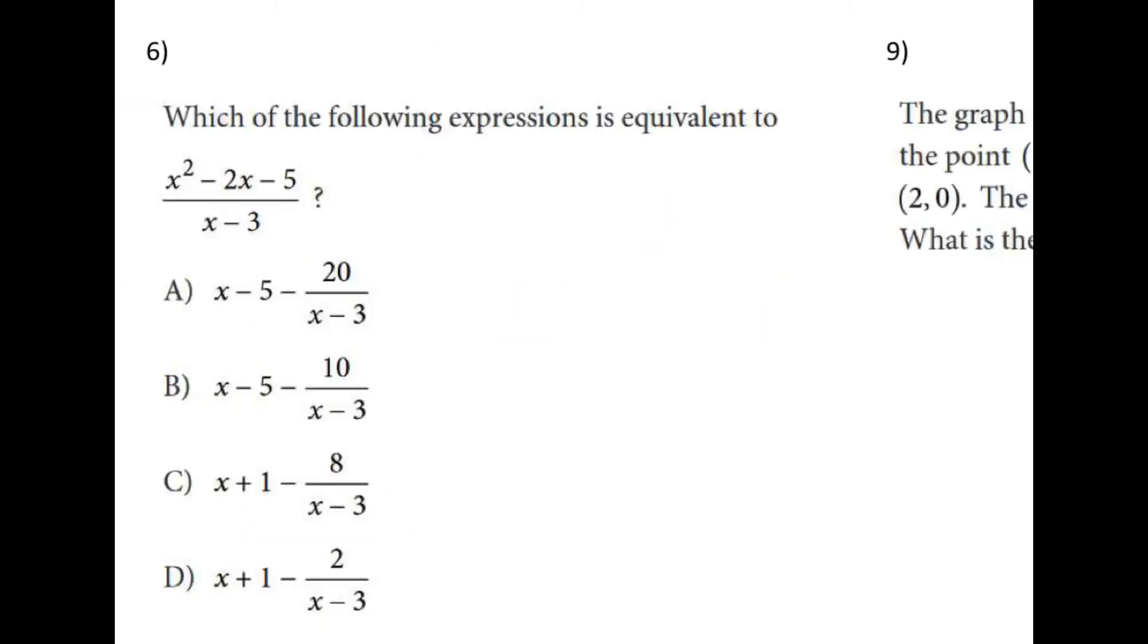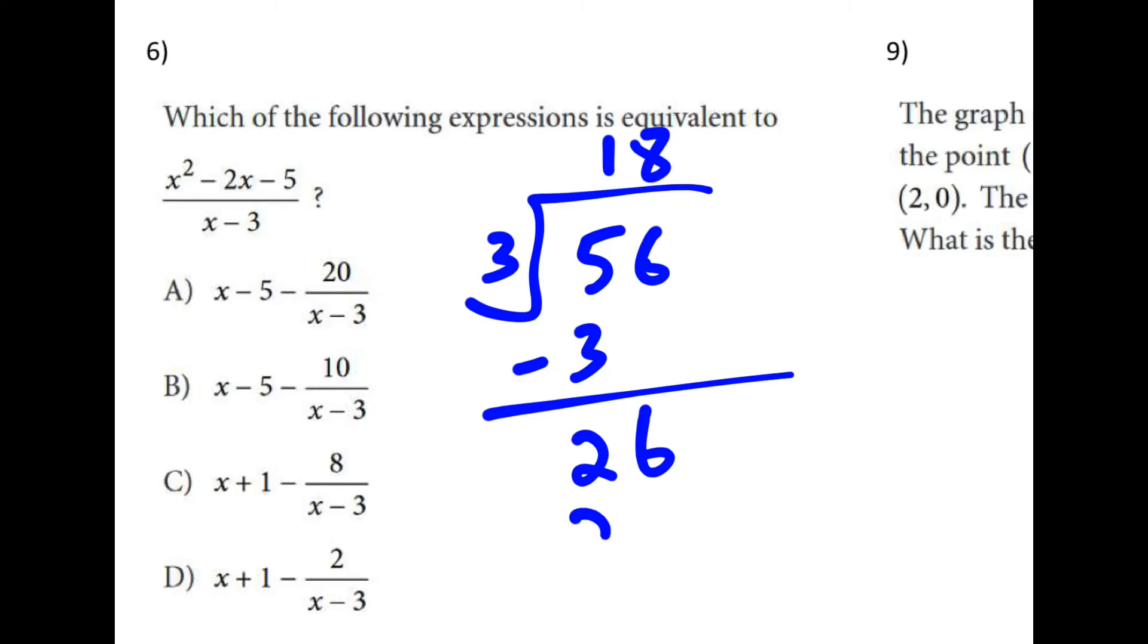For number 6, you could take a long division approach to this. Say, for example, you're dividing 56 by 3. You could ask yourself, how many times does 3 go into 5? 1. 3 times 1 is 3. We subtract. We have 2. Carry down to 6. How many times does 3 go into 26? 8. 8 times 3 is 24. Subtract. We have 2. So this is a remainder. Remainder 2. In fact, it's a third, so 2 thirds.